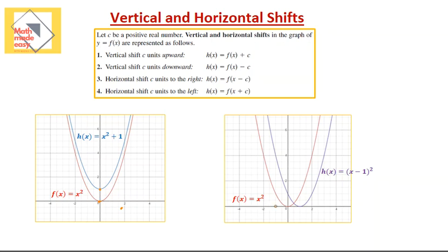In the second graph, we still have the same parent function — the one in red, f of x equal to x squared — and it has shifted 1 unit to the right. This purple graph has been shifted 1 unit to the right, so instead of having the vertex at (0, 0), we have the vertex at (1, 0). So this is a vertical shift — only the value of y has changed — and this is a horizontal shift — only the values of x have changed.